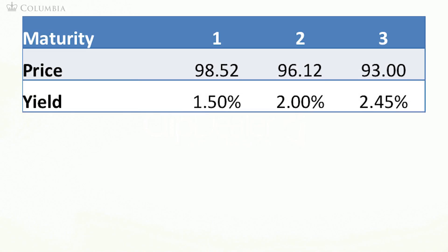Suppose you see the following prices for strips. Using these prices, we compute the yields for these different maturities. You should be able to do this on your own by using the formula we covered that relates the price of strips to their yields and time to maturity.